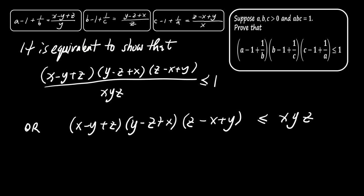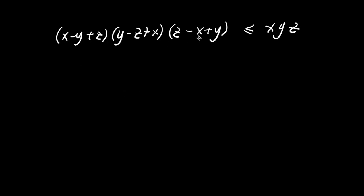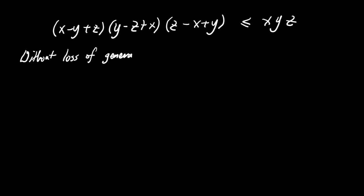Let's simplify the problem further. Without loss of generality, we can assume that x is less than or equal to y and y is less than or equal to z. This assumption makes it easier to handle the terms.